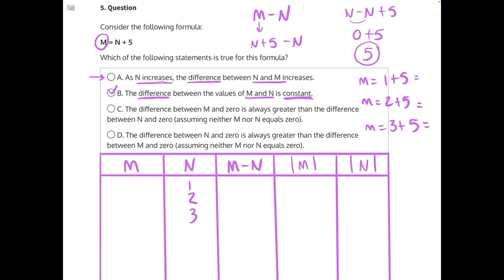The results will be 6, 7, and 8. Then if we take the difference of M and N in our table here, we would have 6 minus 1, which would give us 5. Then we would have 7 minus 2, which would also give us 5. Then 8 minus 3, which also gives us 5.